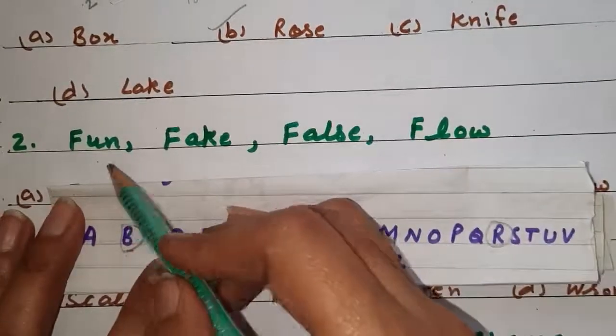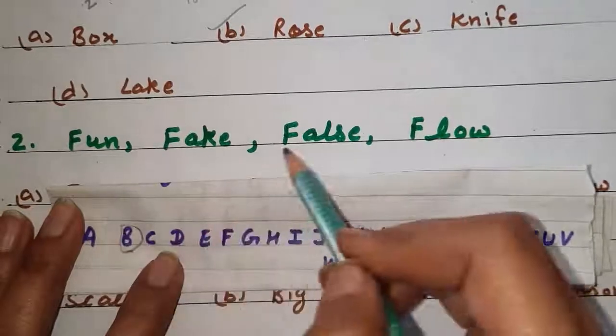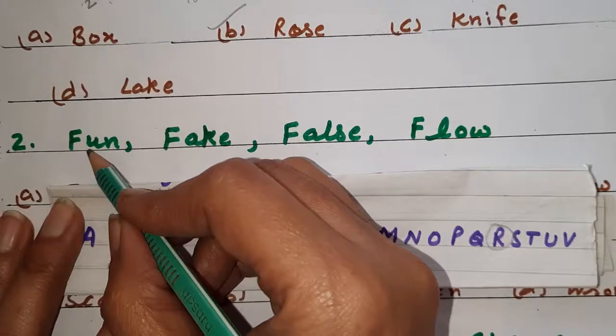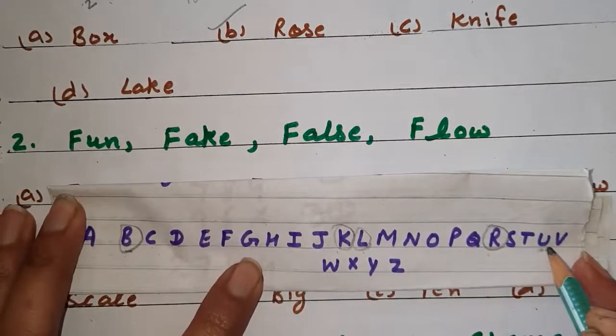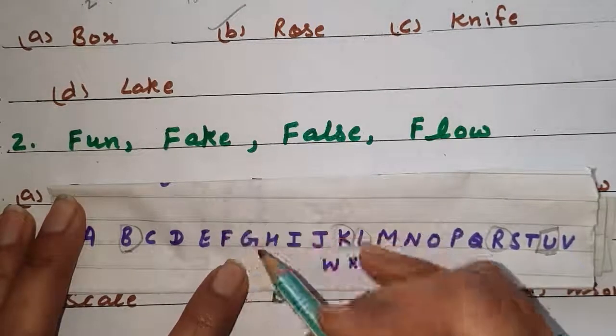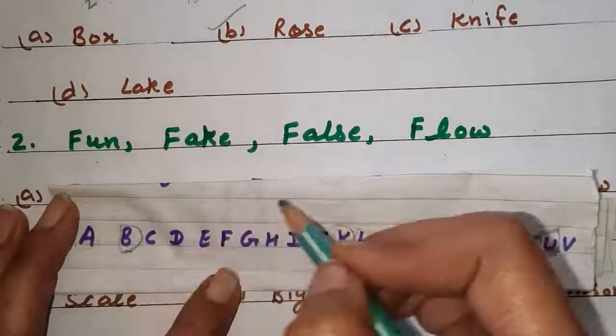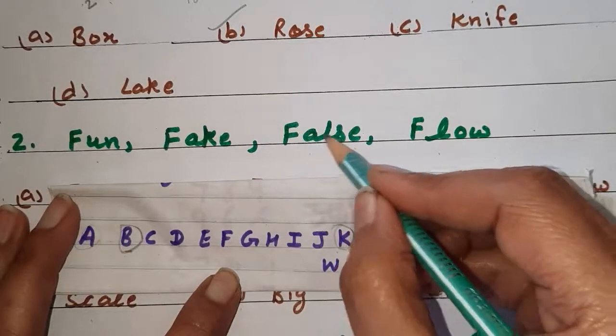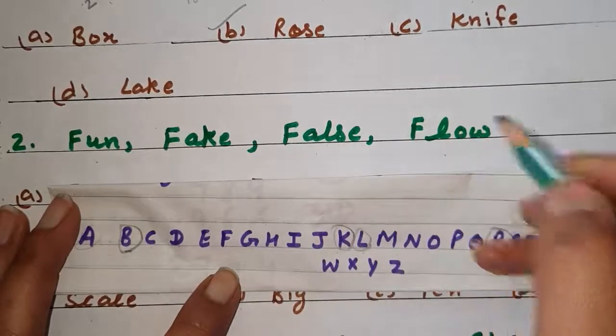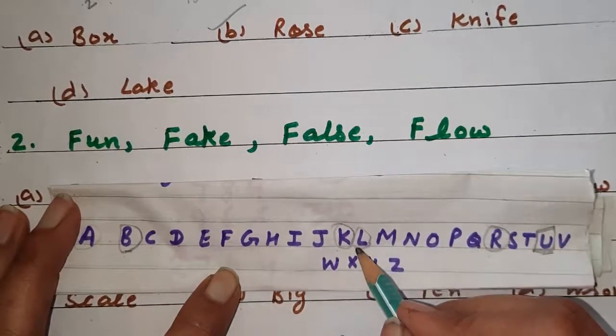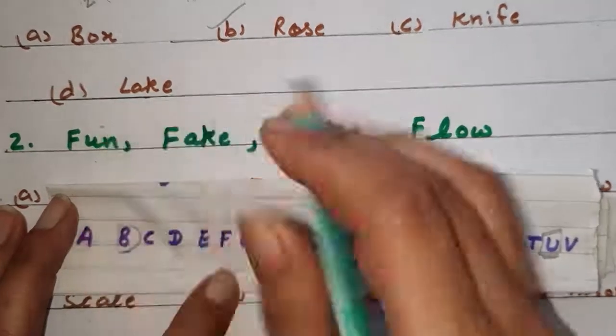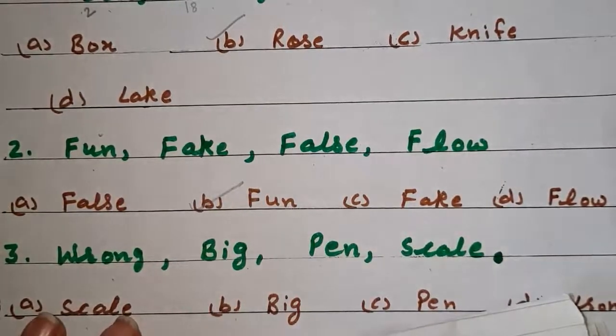Second question. Fun, fake, false, flow. See F, F, F, F, so it can't help us. Now come to the second alphabet. U. Check here U. Then next is A, first. So here again A. Out of these two, one word will come at the first position. We want the last. L is here. So last will be there. We are having U. So fun. Fun is the last one. Got it?